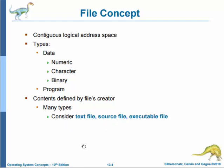The information in a file is defined by its creator, and many different types of information may be stored in a file such as source or executable programs, numeric or text data, photos, music, video, and so on. A file has a certain defined structure which depends on its type. A text file is a sequence of characters organized into lines and possibly pages. A source file is a sequence of functions organized as declarations followed by executable statements, while an executable file is a series of code sections that the loader can bring into memory and execute.